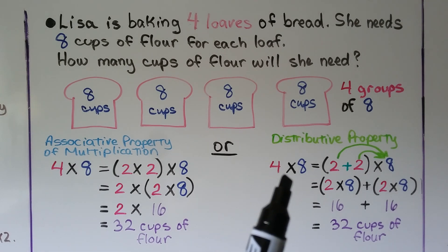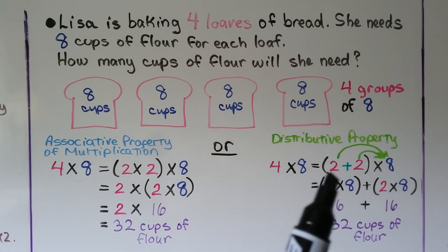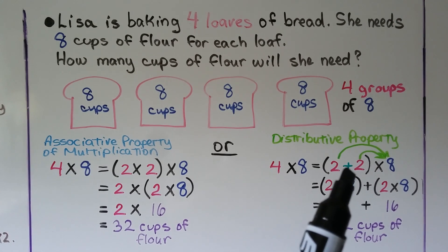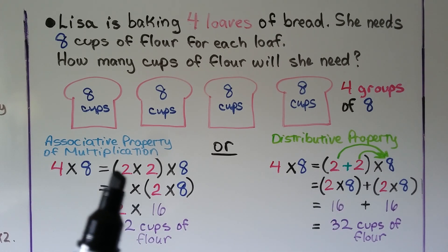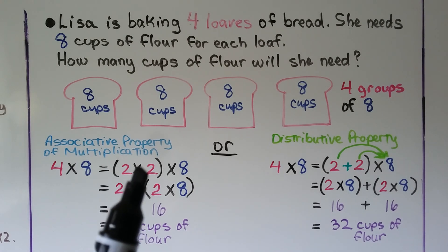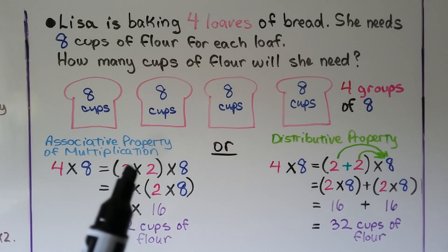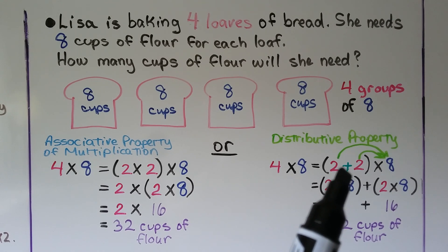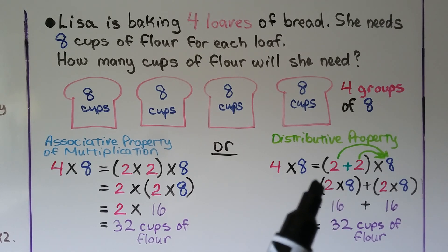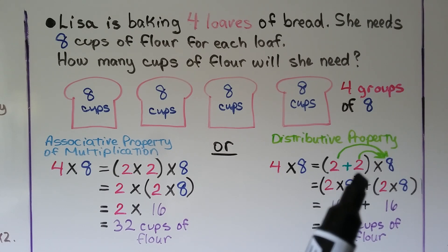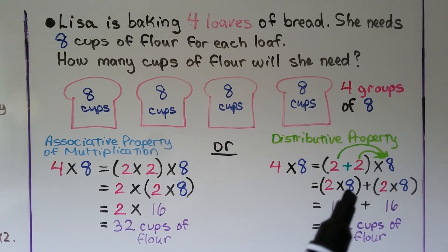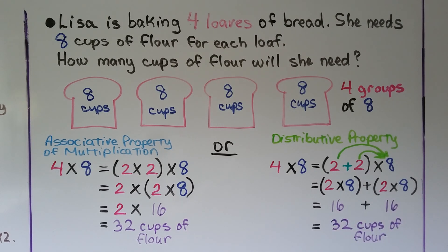We can also use the distributive property and break the 4 into a 2 plus 2. Notice: the distributive property uses a plus sign, while the associative property used a times sign, because 2 times 2 equals 2 plus 2. We distribute the 2 to the 8 plus this 2 to the 8, giving 2 times 8 plus 2 times 8, which equals 16 plus 16. We add the products and get 32 cups of flour. Either way, we got the same answer.